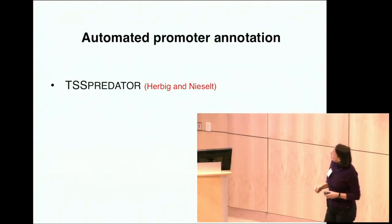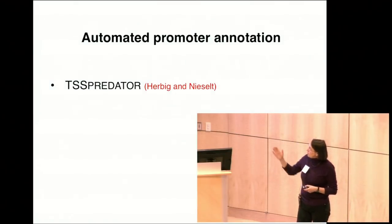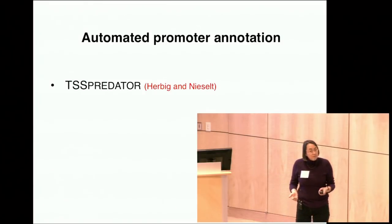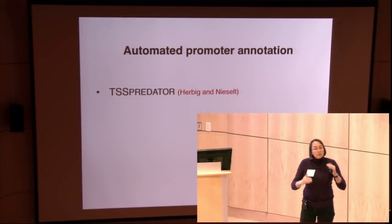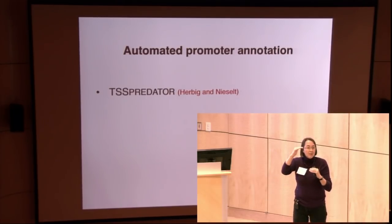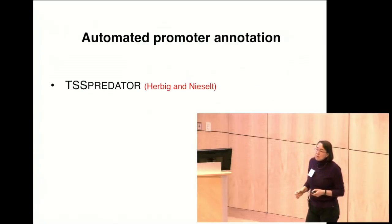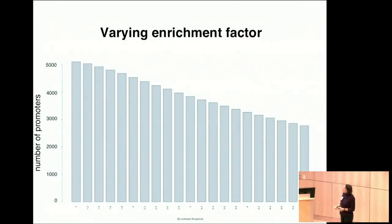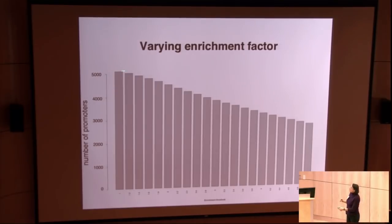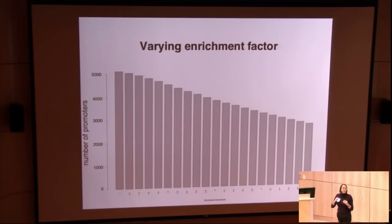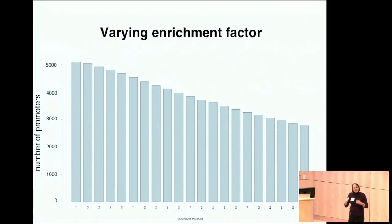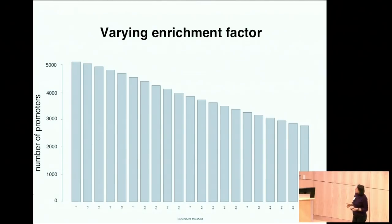As another example, we're using an automated promoter annotation program developed by Alexander Habik and Kai Nefit. There too, parameters can be varied. One parameter is the enrichment factor — the difference between the TEX-treated and untreated sample. By varying just this one enrichment factor parameter, you can get either 5,000 promoters in E. coli or closer to 3,000. This can have a significant effect on your promoter annotation, and if you're determining antisense RNAs based on promoter annotation, it affects how many antisense RNAs you predict.